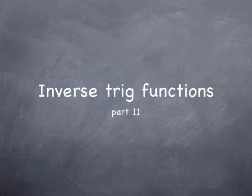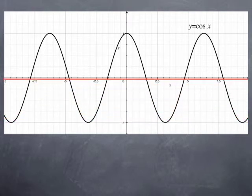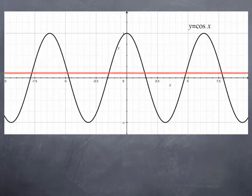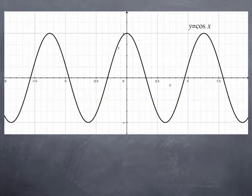Continuing our study of inverse trigonometric functions, we're going to look at the inverse cosine function. Just like for the sine function, if you look at the graph of the cosine function, it is clear that this is not a one-to-one function. If we look at the horizontal line test, each horizontal line intersects the graph infinitely many times. So cosine is not a one-to-one function. However, just like for the sine function, we can consider an appropriate restriction of the cosine function to an interval on which it is one-to-one.